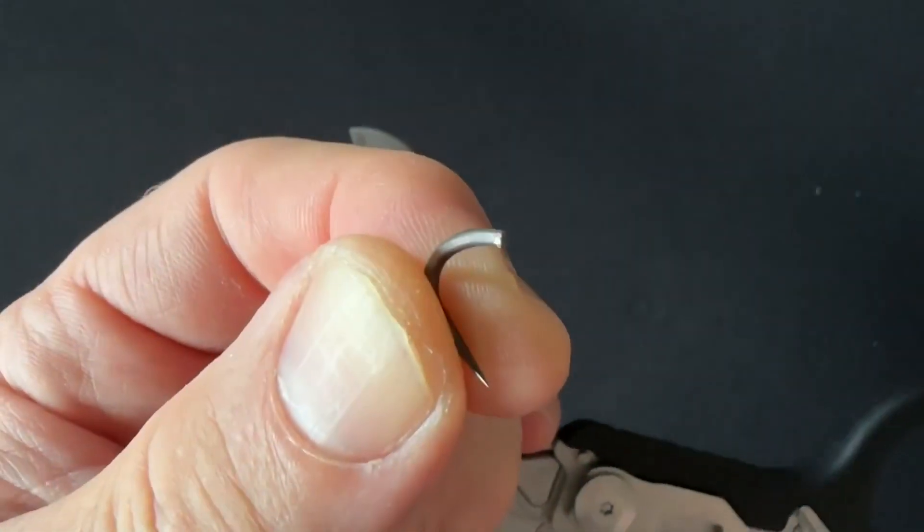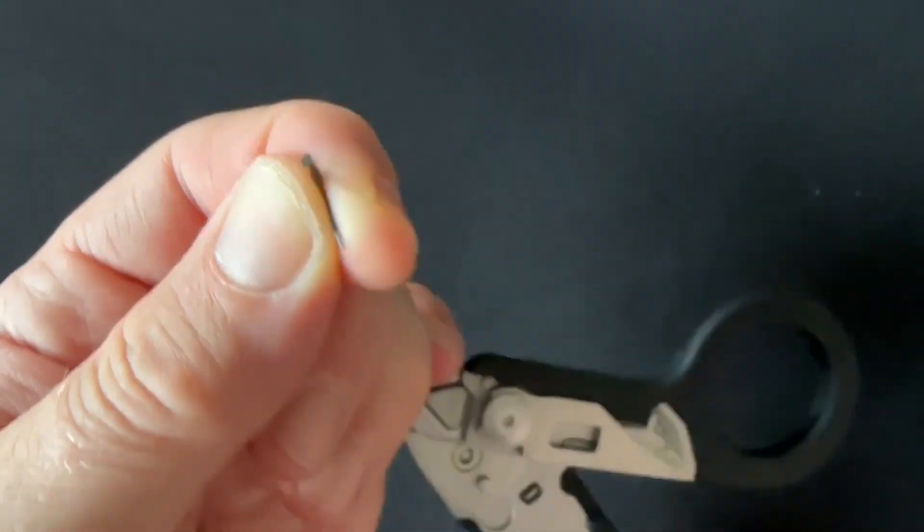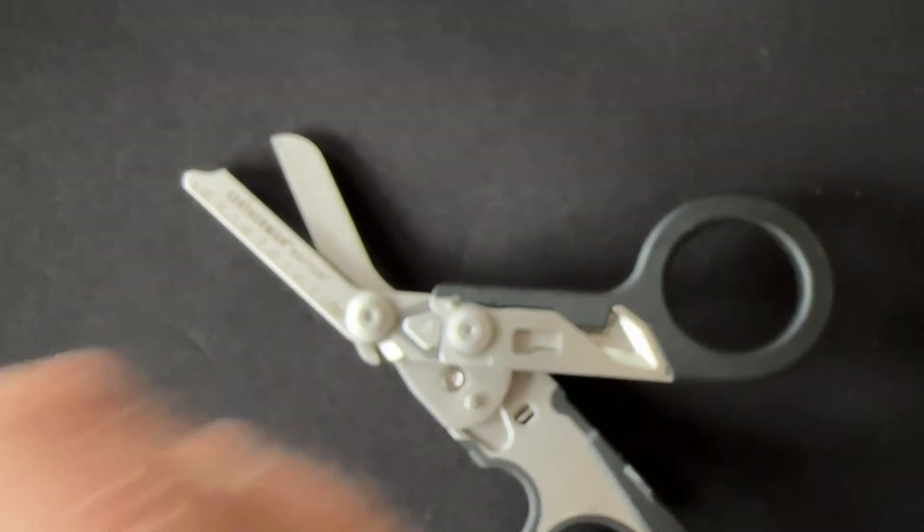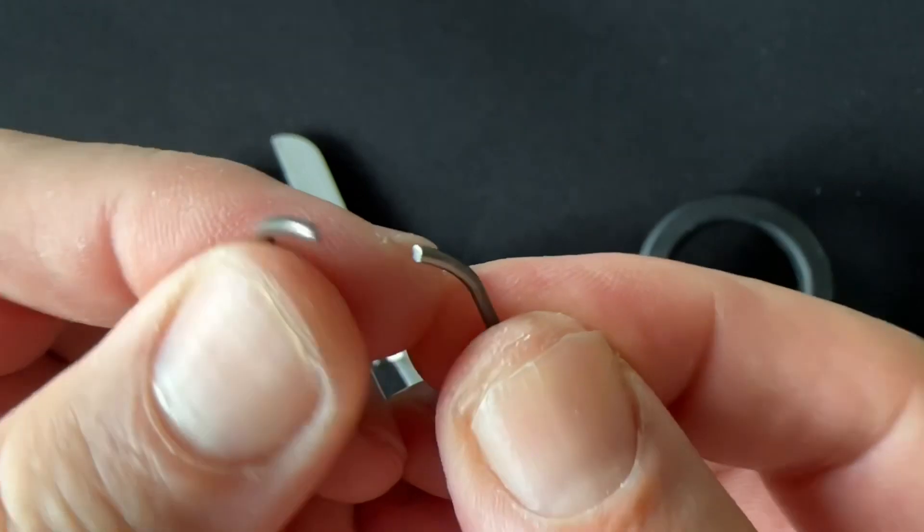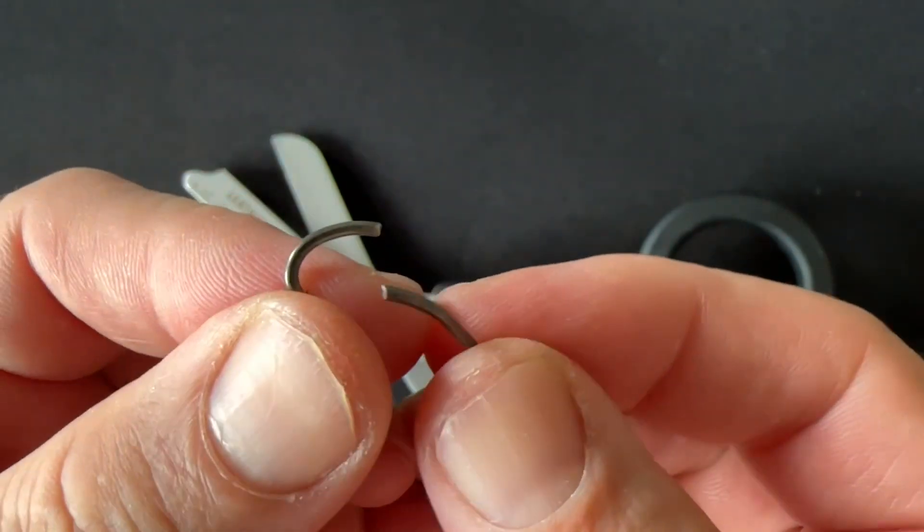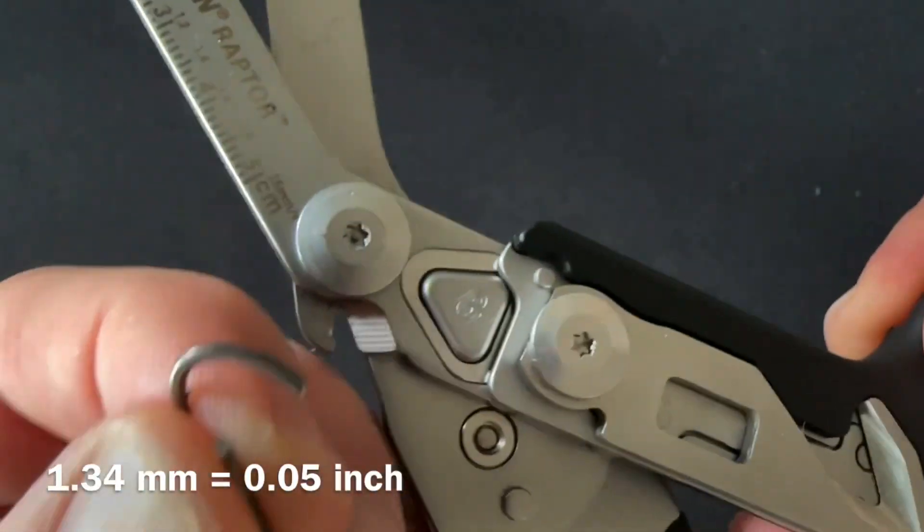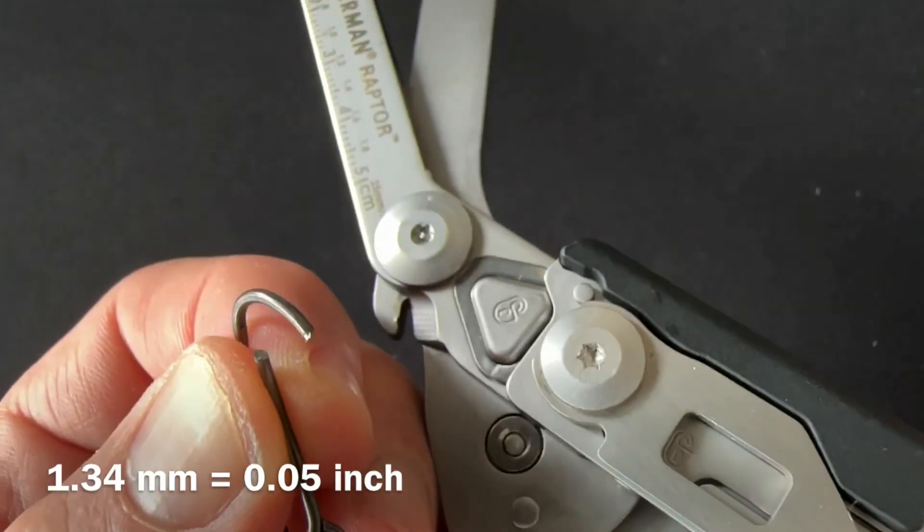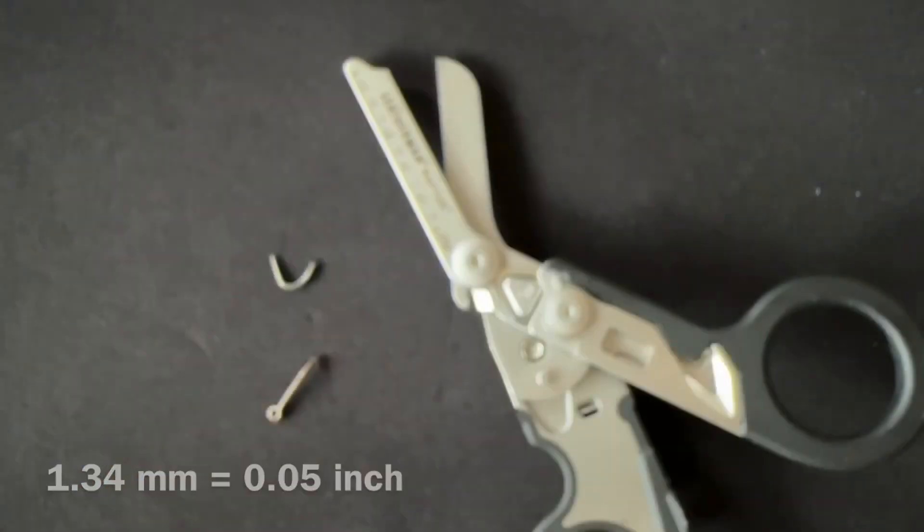Now, if you measure one of these hooks, the exact cross sectional diameter of that hook is 1.34 mm, or 0.05 inch.